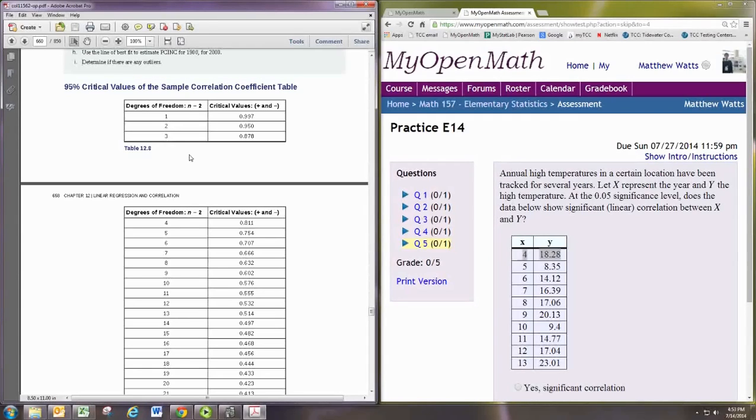where our degrees of freedom would be 8, right, in this case since we have n was 10, degrees of freedom would be 8. So we want that row right there. So the cutoff for us is 0.632